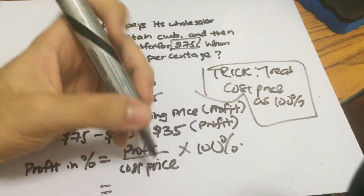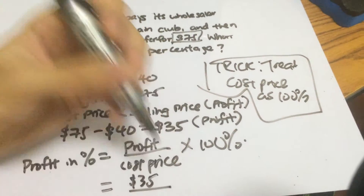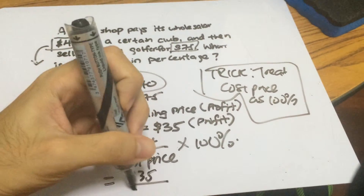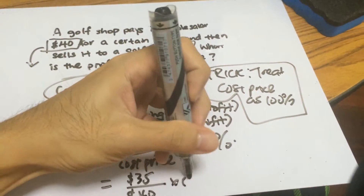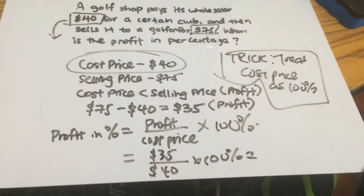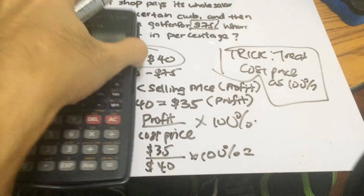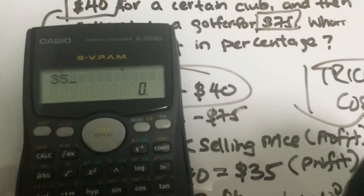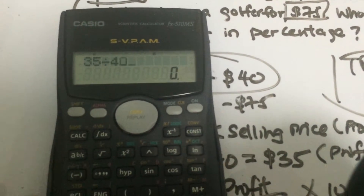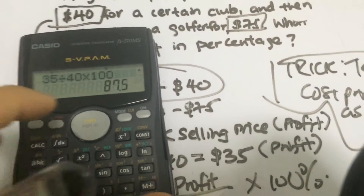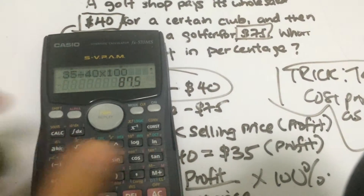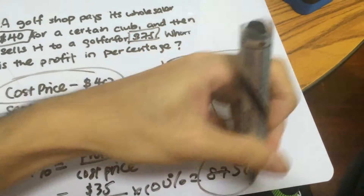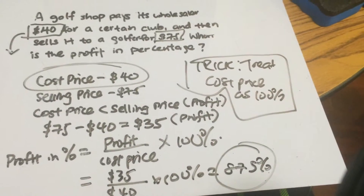Our profit is $35 and the cost price is $40, so that's 35 over 40 times 100%. Let me key that into the calculator — 35 divided by 40 times 100 — that gives us 87.5% profit. Wow, that's a lot of profit!